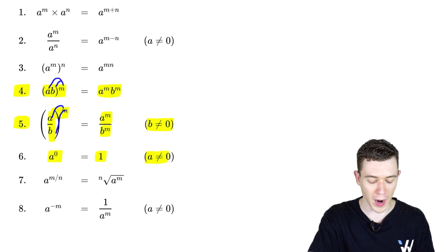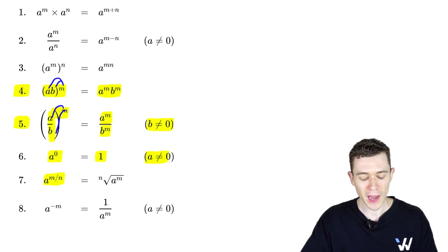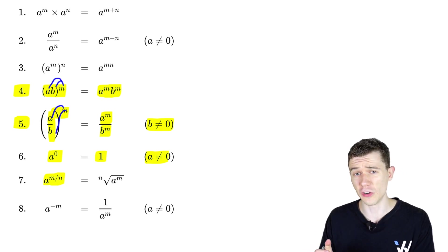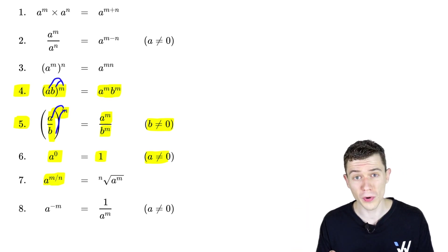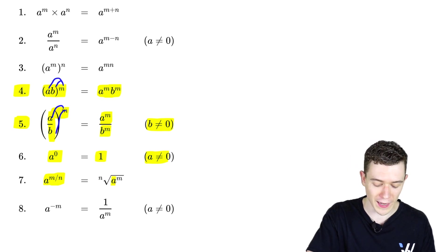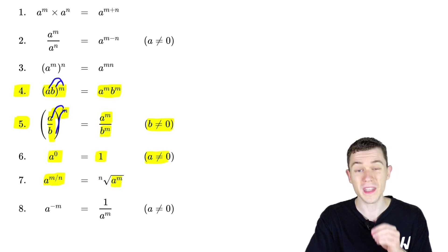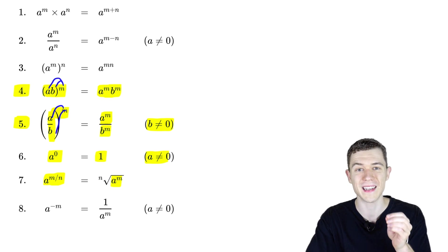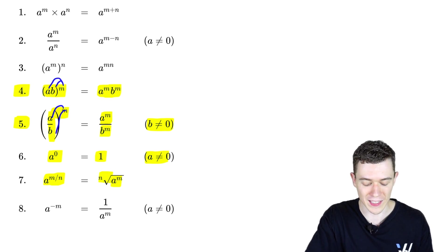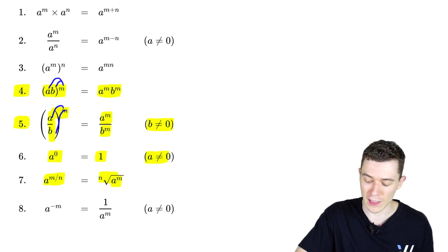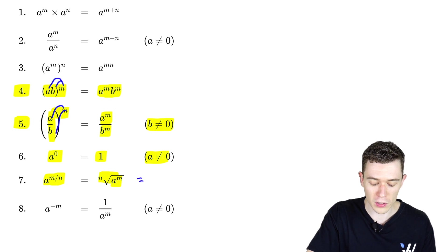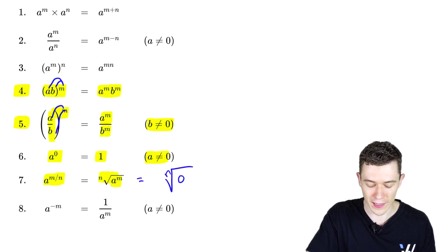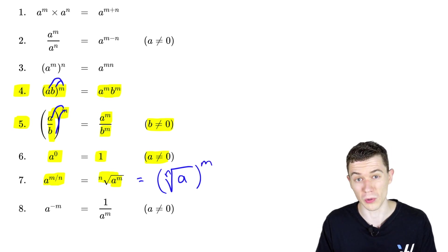Next, let's look at radical notation. If we have a fractional power — a to the m over n — this means a to the positive m, but the over n is the root, the index of the radical. So this is the same as the nth root of a to the m. We could also write it as the nth root of a, all to the m. Those are completely interchangeable.